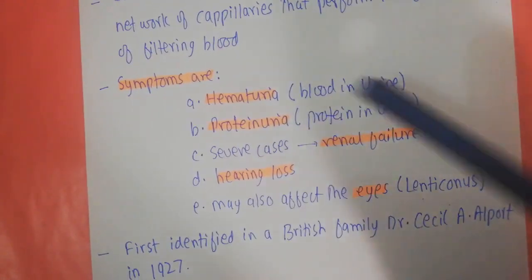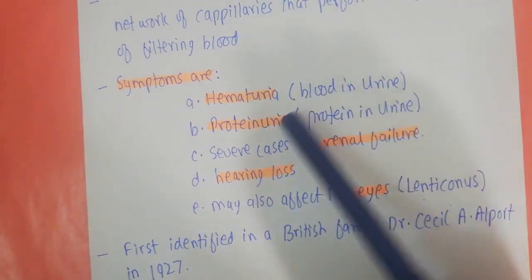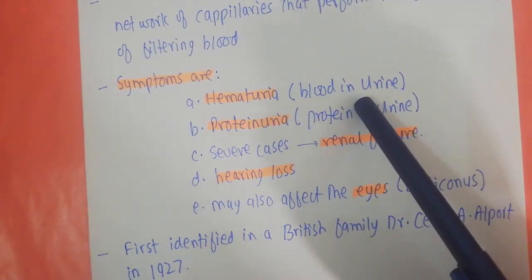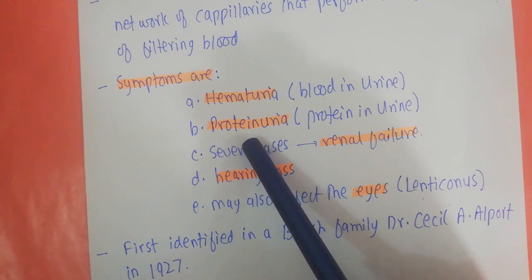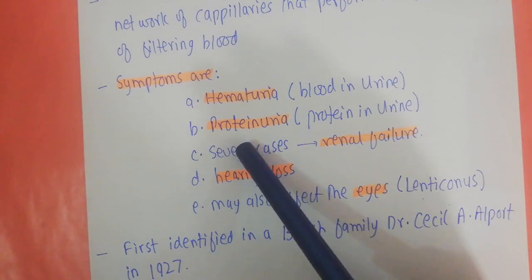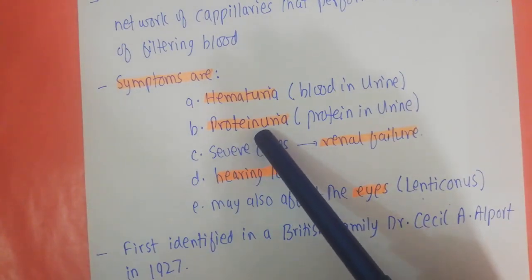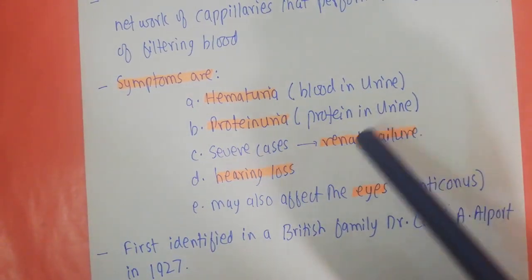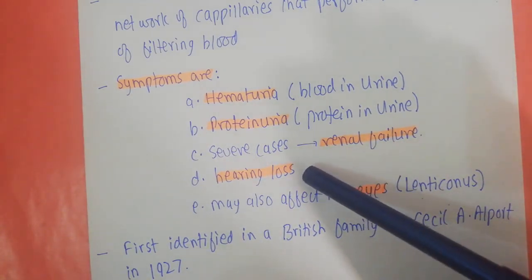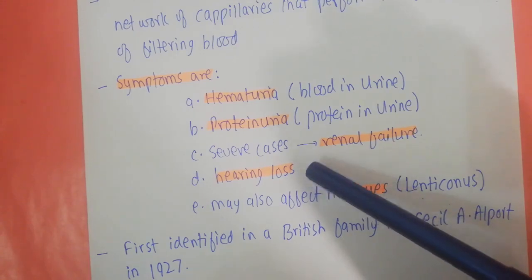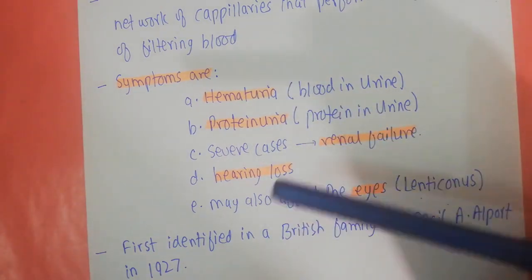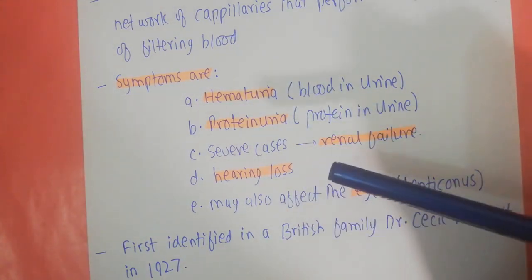Symptoms of Alport syndrome include hematuria (blood in the urine) and proteinuria (protein in the urine). In severe cases there can be renal failure, hearing loss, and effects on the eyes. These are the main symptoms seen in Alport syndrome.